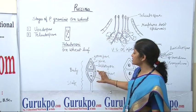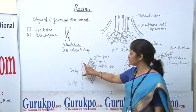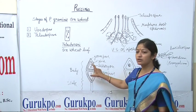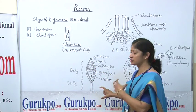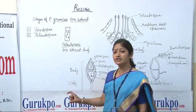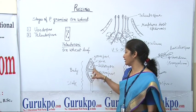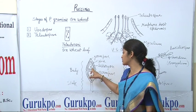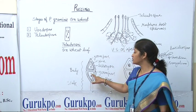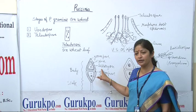Teliospores have a spindle-shaped structure, having a body and a small stalk. They appear thick — consisting of a thick outer cell wall called exine, and an internal cell wall called intine. And it shows two nuclei, called the dikaryon.